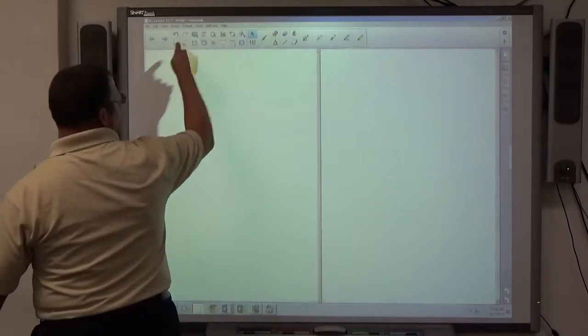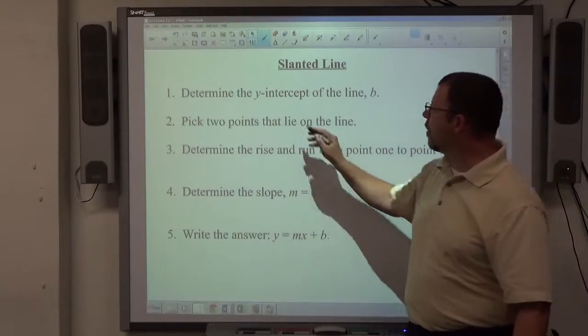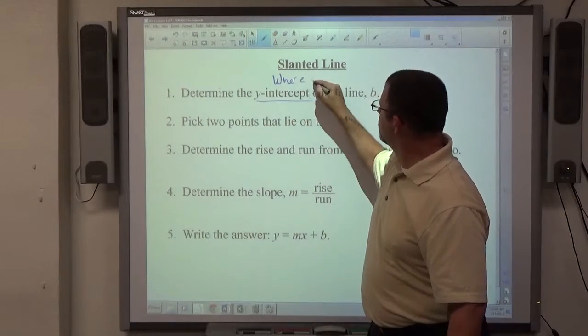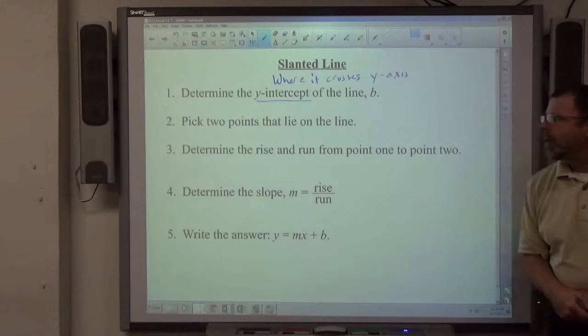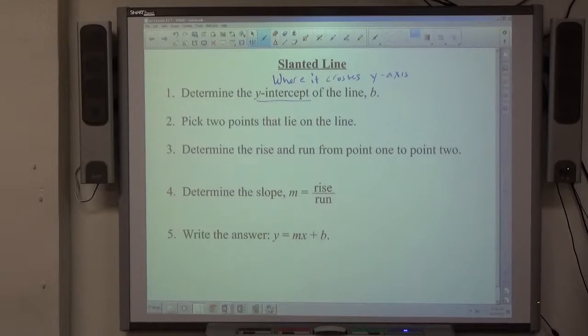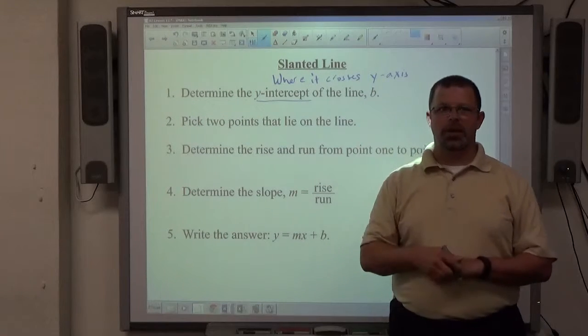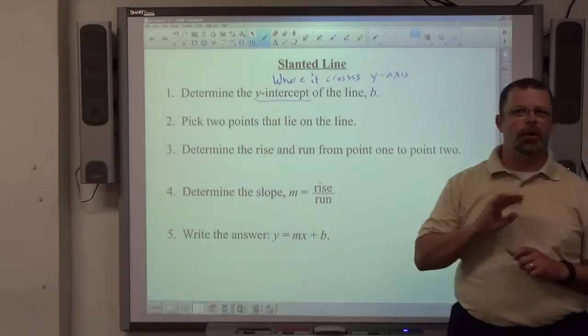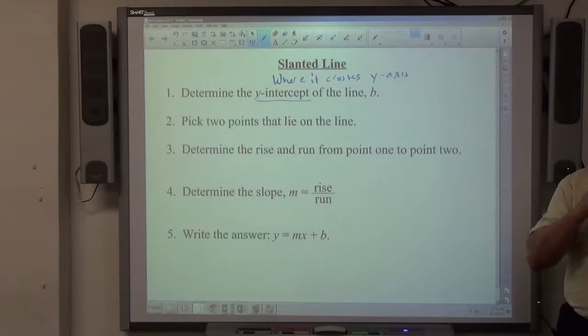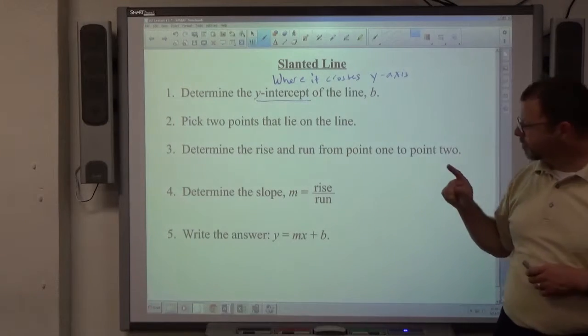For a slanted line, you can see that the process is a little bit longer. Determine the y-intercept of the line. We're going to call it B. Y-intercept is where it crosses the y-axis. Pick two points that lie on the line. It doesn't have to be the y-intercept, but you can. When I say two points, pick like 2,3 or negative 1,4. Don't pick 1.37, 2.99. Try and pick nice little points that hit right on nice little integer values. At this point, we'll be getting those, at least two on every graph. They'll be there.